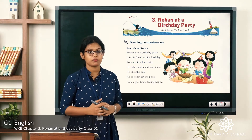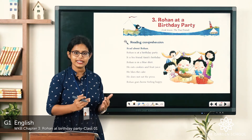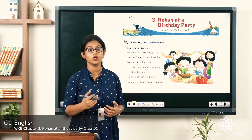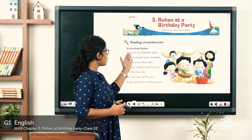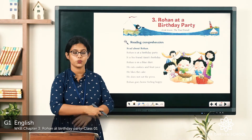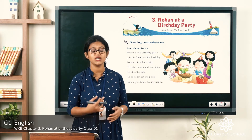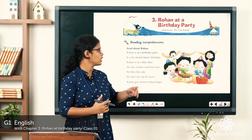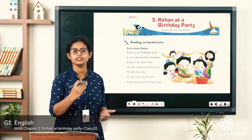The name of the chapter is 'Rohan at a Birthday Party' and you can see a passage here. We'll read and understand this passage, then we'll answer the questions below. So read about Rohan. Rohan is at a birthday party. So where is Rohan? Rohan is at a birthday party. We all celebrate birthdays, right — we go for our friend's or cousin's birthday party.